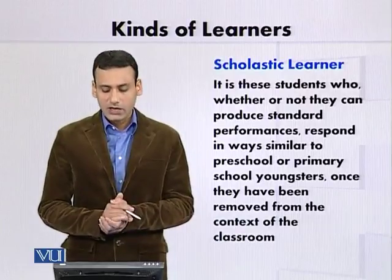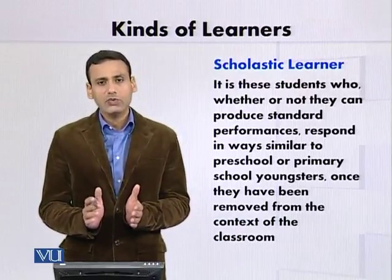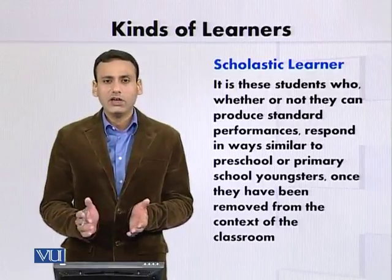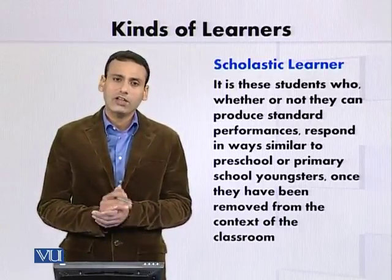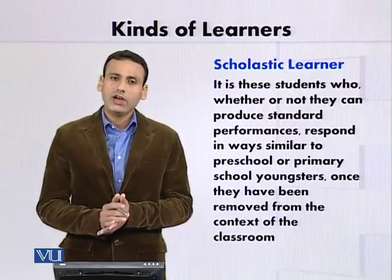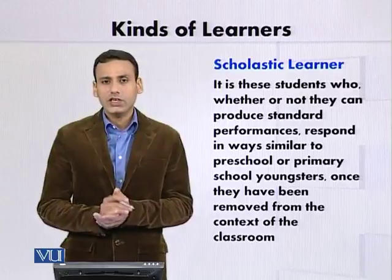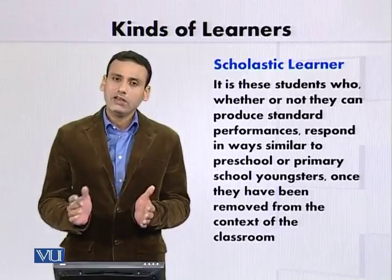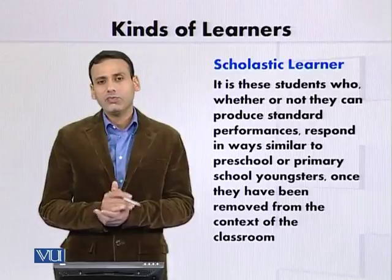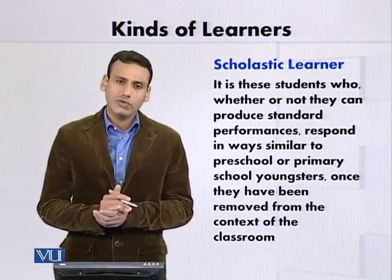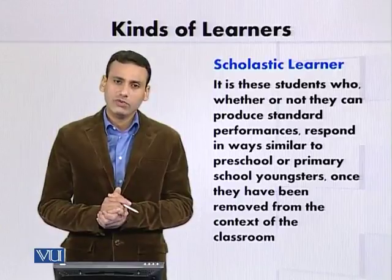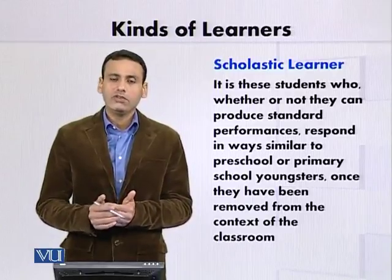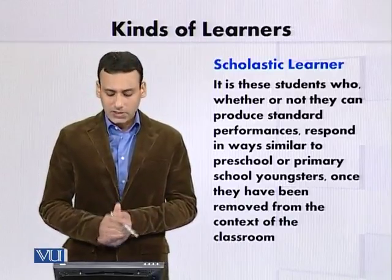Scholastic learners کے بارے میں یہ کہا جاتا ہے کہ ایک دفعہ انہیں اگر classroom کے context سے باہر لے کر آئیں تو sometimes یہ perform کر پاتے ہیں اور sometimes نہیں۔ For instance, you tell a child to count till 20 — so 1, 2, 3, 4 — وہ کئی دفعہ count کر پائیں گے اور کئی دفعہ نہیں۔ یہ ایک restricted way of learning ہے، اور یہ similar response کرتے ہیں جس طرح بہت سے primary اور pre-school children کرتے ہیں، جیسے ABCD یا الف ب یاد کرنا۔